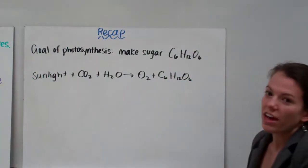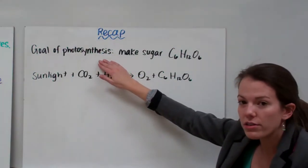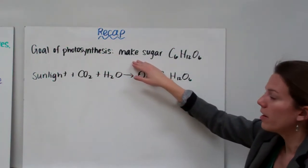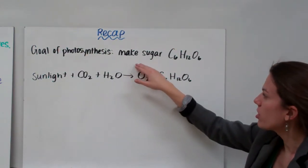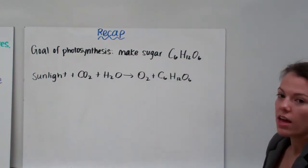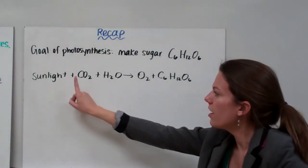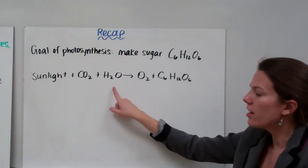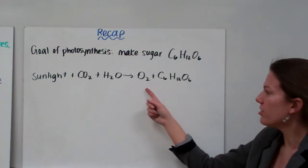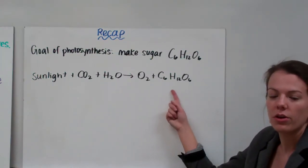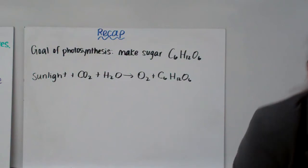Now let's look at a recap of photosynthesis. The goal of photosynthesis was to make food for a plant. The food of a plant is sugar — the goal is to make sugar, or C6H12O6. The formula for photosynthesis is: we take sunlight, carbon dioxide, and water, mix them together, and we change that into oxygen gas and our glucose, C6H12O6.